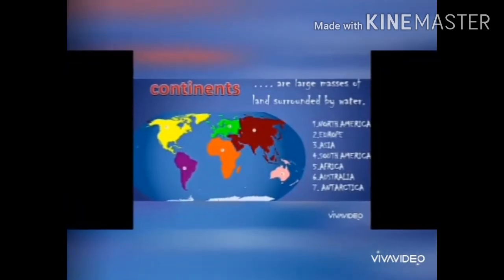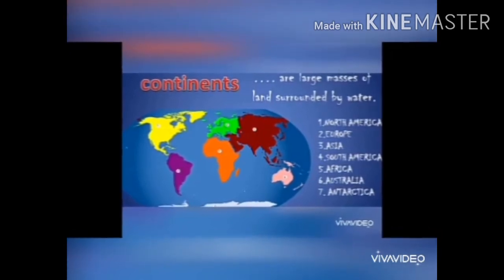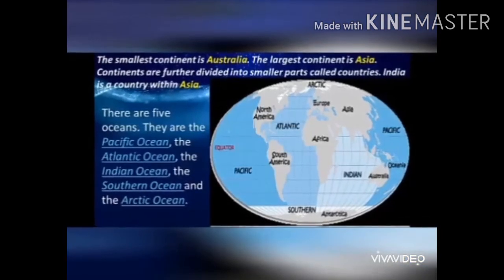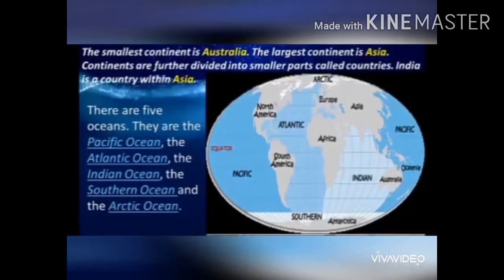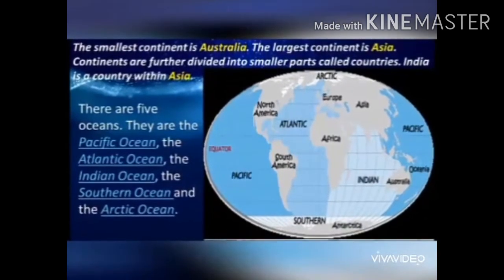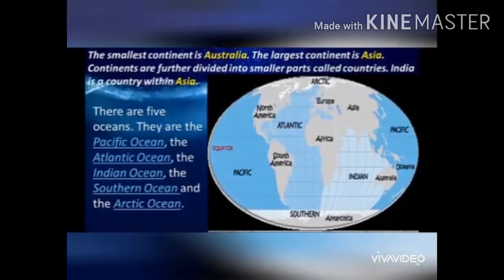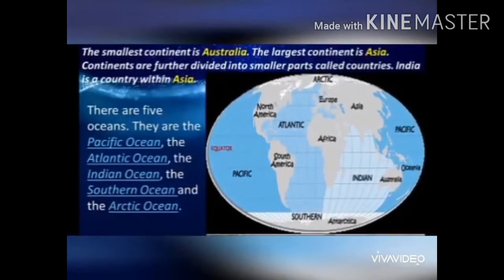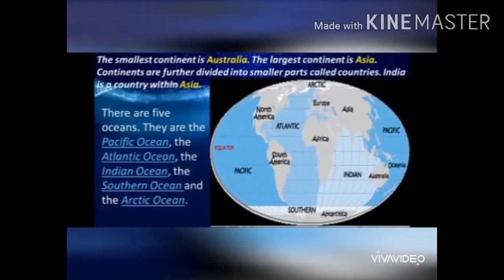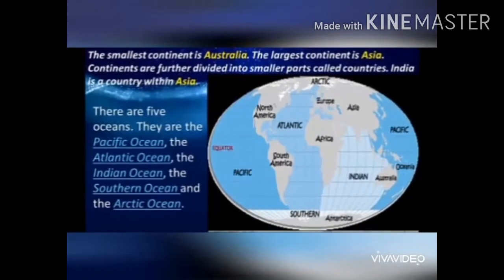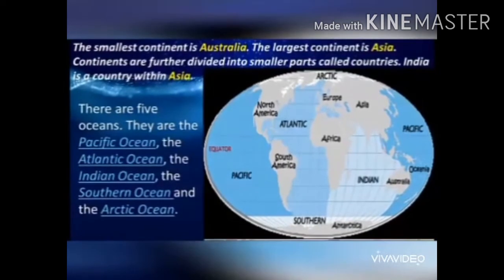The seven continents are: North America, Europe, Asia, South America, Africa, Australia, and Antarctica. The smallest continent is Australia and the largest continent is Asia. Continents are further divided into smaller parts called countries — India is a country within Asia. There are 5 oceans: the Pacific Ocean, the Atlantic Ocean, the Indian Ocean, the Southern Ocean, and the Arctic Ocean. On the map, the blue color shows the oceans and the brown color shows the continents.